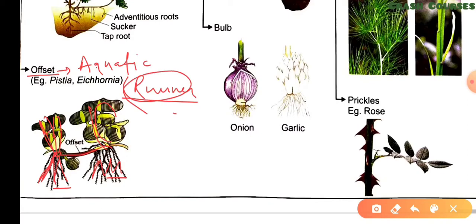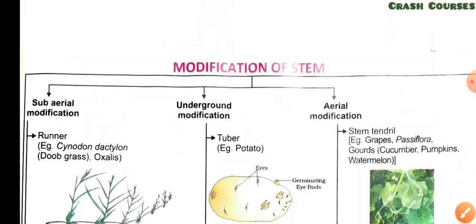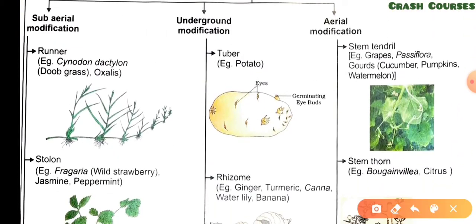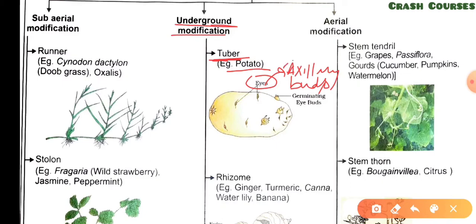Now we come to underground modification. The first type is tuber, which is found in potato. The tips of branches become swollen in the soil. The eyes on potato are actually axillary buds — there are many exam questions on this. What the eyes represent are nodes.